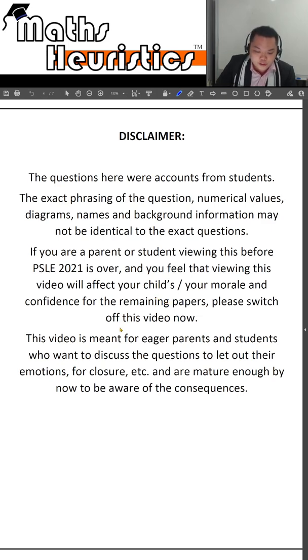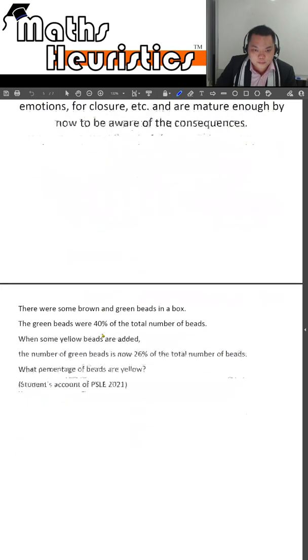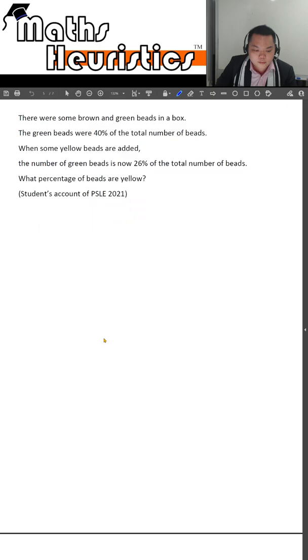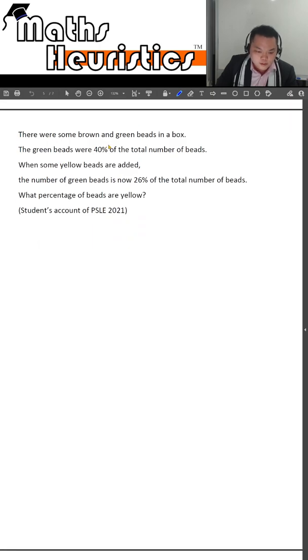Now I'll begin in 3, 2, 1, start. There were some brown and green beads in the box. The number of green beads was 40% of the total number of beads. When some yellow beads are added, the number of green beads is now 26% of the total number of beads. What percentage of the beads are yellow?